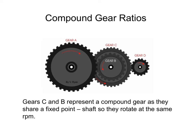I'm going to go over compound gear ratios for this video. Notice that gears B and C are sharing a fixed point, or you could also say they're sharing that shaft. So they're going to rotate at the same RPM, and that's whenever you know that you have a compound gear.